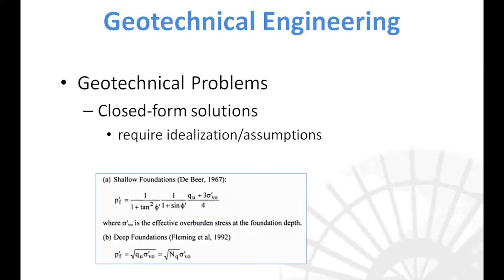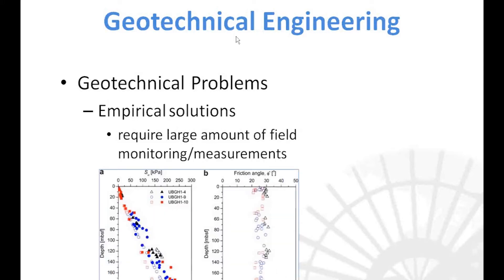A few approaches to performing these calculations are using closed-form solutions, empirical solutions, and numerical solutions. The closed-form or classical solutions require some kind of idealization or assumptions to describe the problem using a set of mathematical equations. Empirical solutions are usually performance-based and require a large amount of field monitoring and field measurements, which must be correlated with laboratory results and design calculations. Consequently, these solutions are dependent on geographic location and local practice.